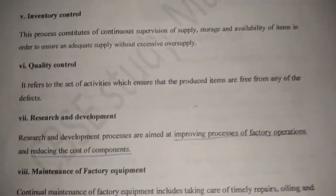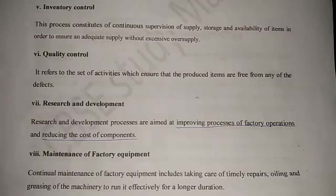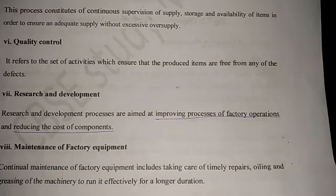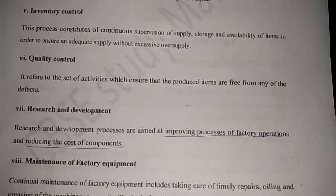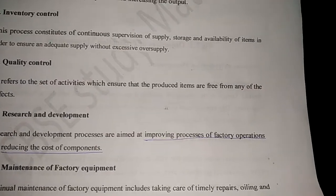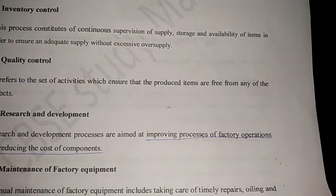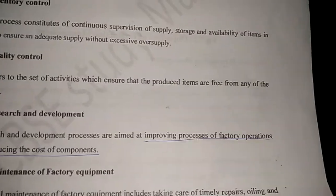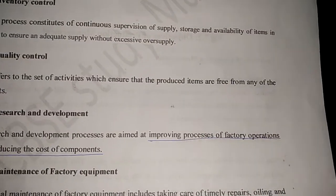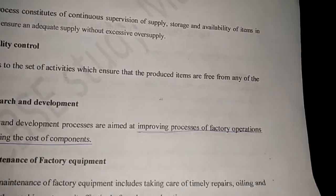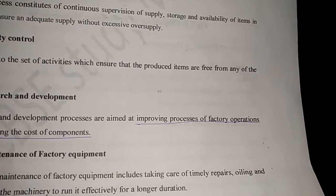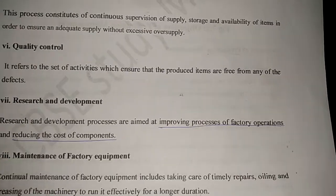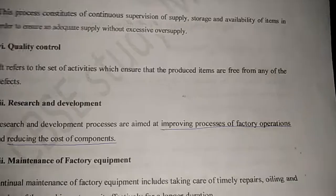Next is maintenance of factory equipment. Factory equipment like machinery, tools, and spare parts should be maintained timely. Timely repairs, oiling, and greasing should be done to run them effectively for a longer duration.